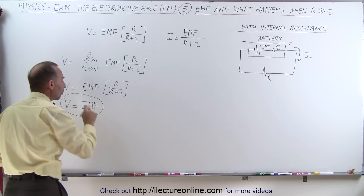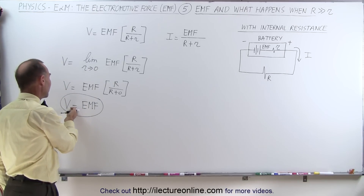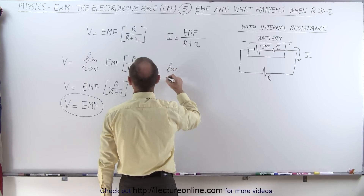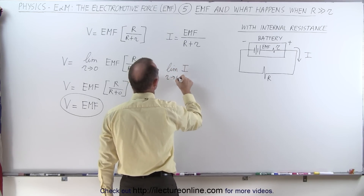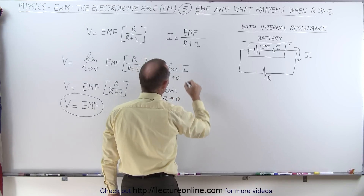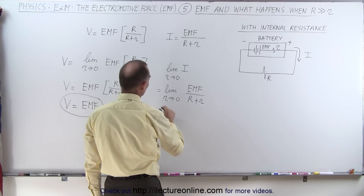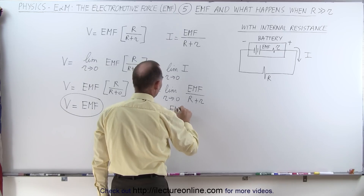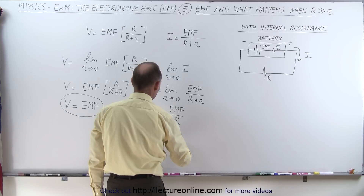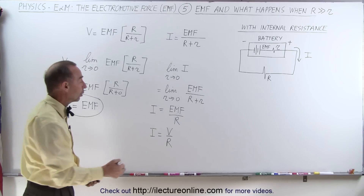So again, when the internal resistance becomes insignificant compared to the resistance of the circuit, for all practical purposes we can say that the voltage provided by the battery equals the emf of the battery. What about the current? Let's take the limit of the current as r approaches zero — again, the internal resistance of the battery. This equals the limit as r goes to zero of emf divided by R plus r. Setting r equal to zero, this becomes emf divided by R, and in that case we can also say that I equals V over R, because the emf then becomes essentially the same as the voltage provided by the battery.